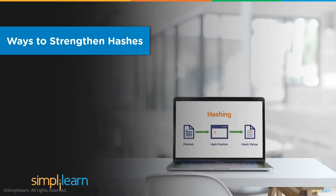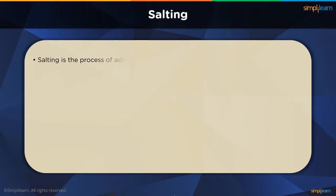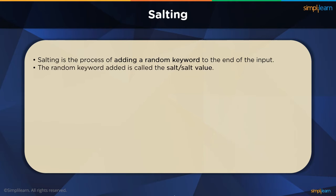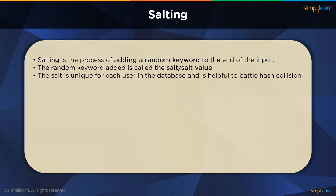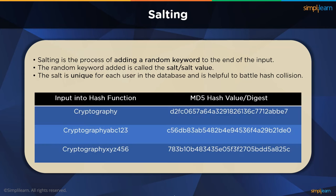Let's say the hash function finds two users having the same password. How can it store both hashes without mixing up the original data? This is where salting and peppering come to play. Salting is the process of adding a random keyword to the end of the input before it is passed to the hash function. This random keyword is unique for each user on the system and is called the salt value, or just the salt. So even if two passwords are exactly the same, their salt value will differ, and so will their digest.